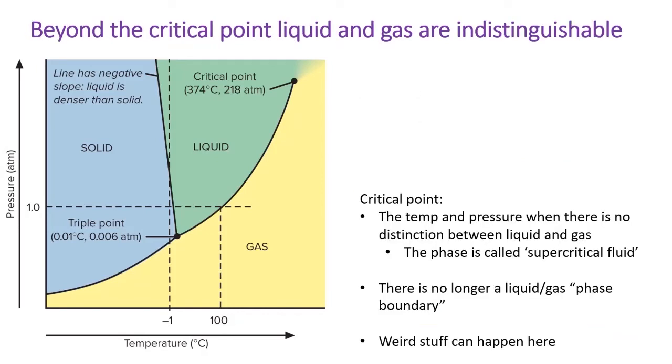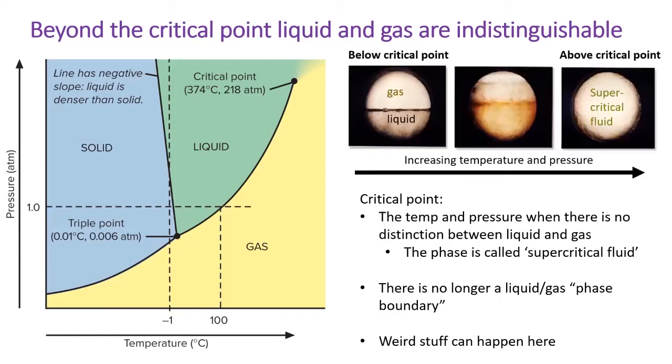But perhaps the spookiest point on the phase diagram is the critical point. The critical point marks the end of the gas and liquid phases as we know them. Beyond the critical point, there is no distinction between gas and liquid. Instead, we have a strange phase called the supercritical fluid. This fluid fills its container like a gas, but the molecules are still very close together and interact like a liquid. Strange and wonderful things can happen in supercritical fluids, and they're often useful to engineers who want to achieve or avoid liquification.